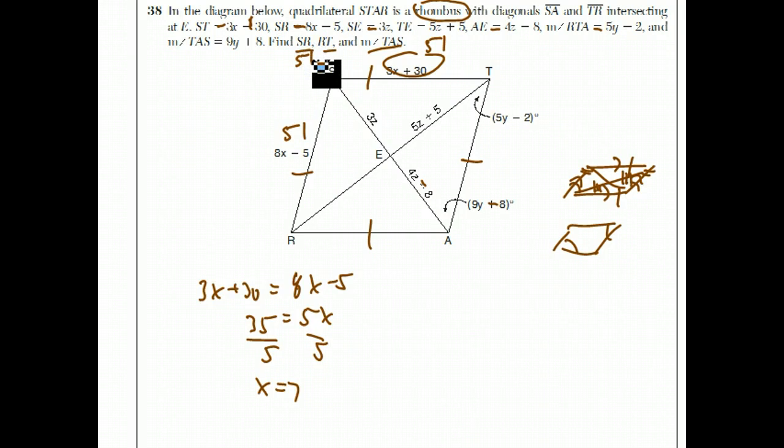Now they want to know about RT, this diagonal here. In any parallelogram, the diagonals bisect each other. That means that SE has to equal AE, which means that 3z has to equal 4z minus 8. Subtract 3z from both sides, add 8 to both sides, and we get z equals 8.